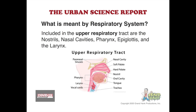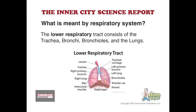The upper respiratory track consists of nostrils, nasal cavities, pharynx, epiglottis, and larynx. The lower respiratory track consists of the trachea, the bronchi, the bronchioles, and the lungs.